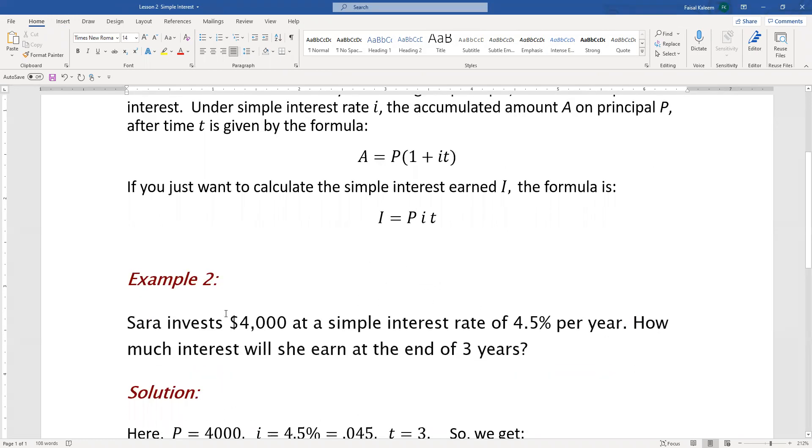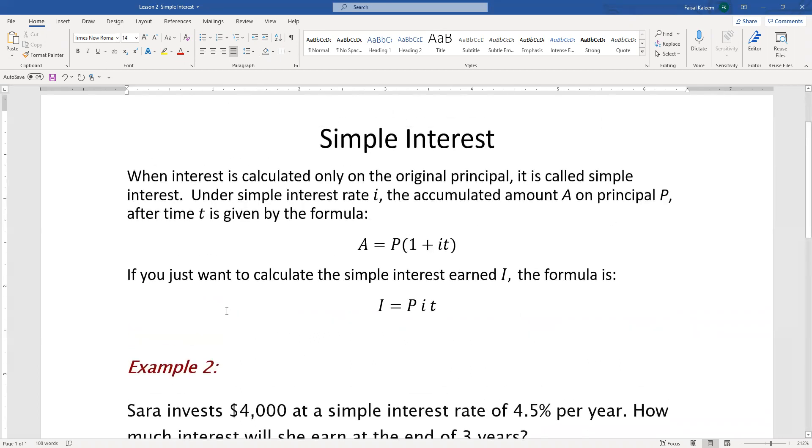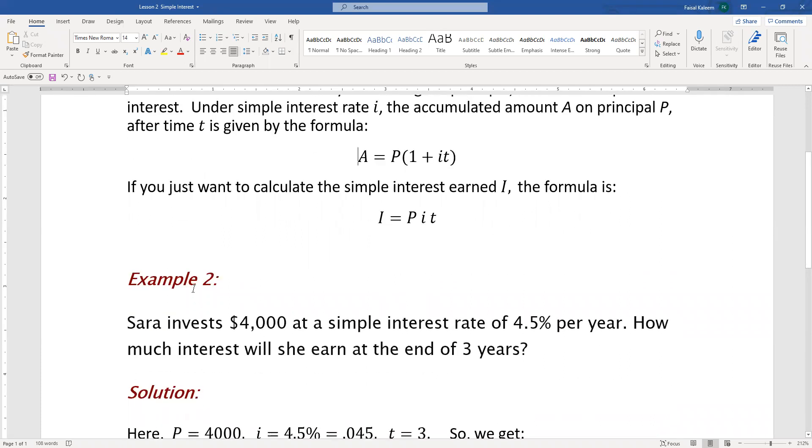Example 2: Throughout this course I'll be numbering examples sequentially. Example one was in lesson one, and this first example of lesson two will be called example two - the count is based on the course, not the lesson. Sara invests $4,000 at a simple interest rate of 4.5% per year.